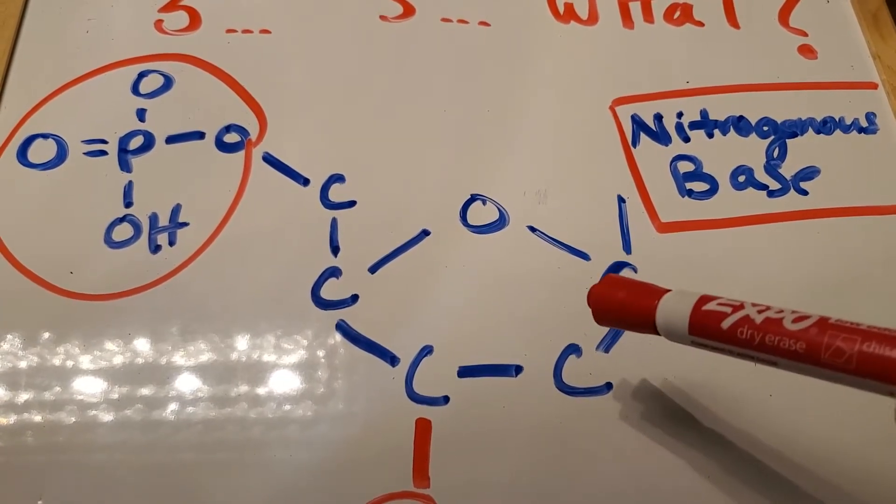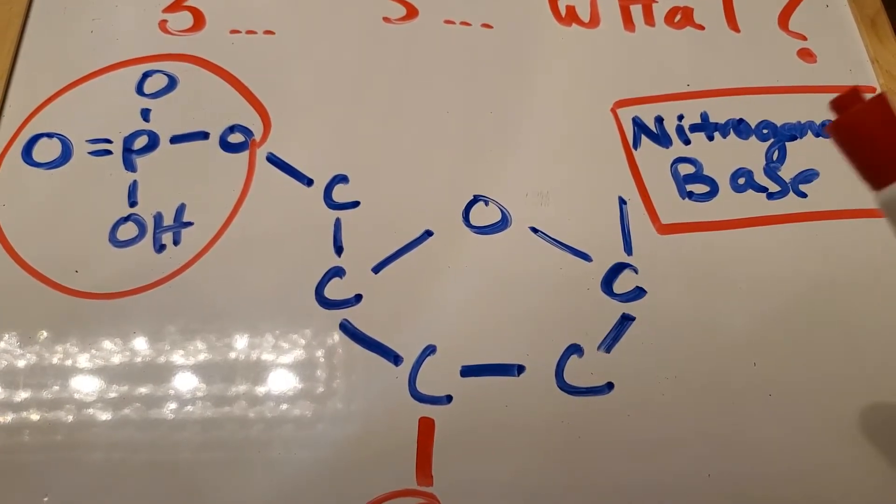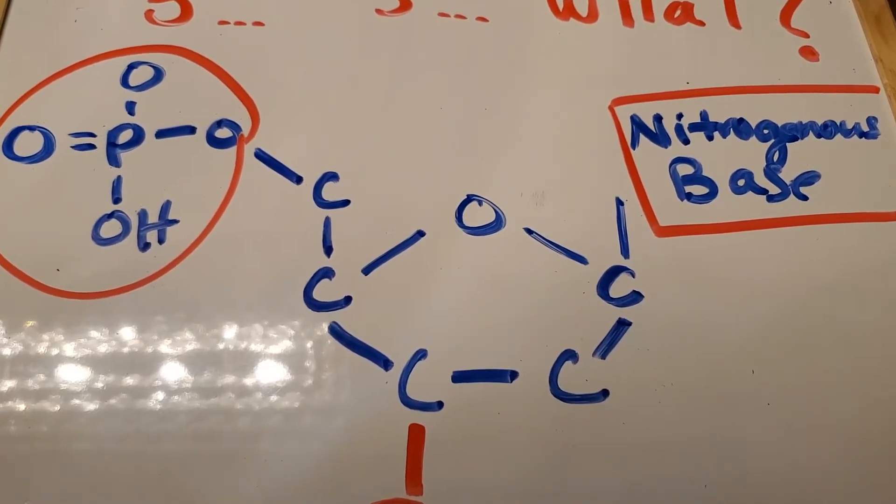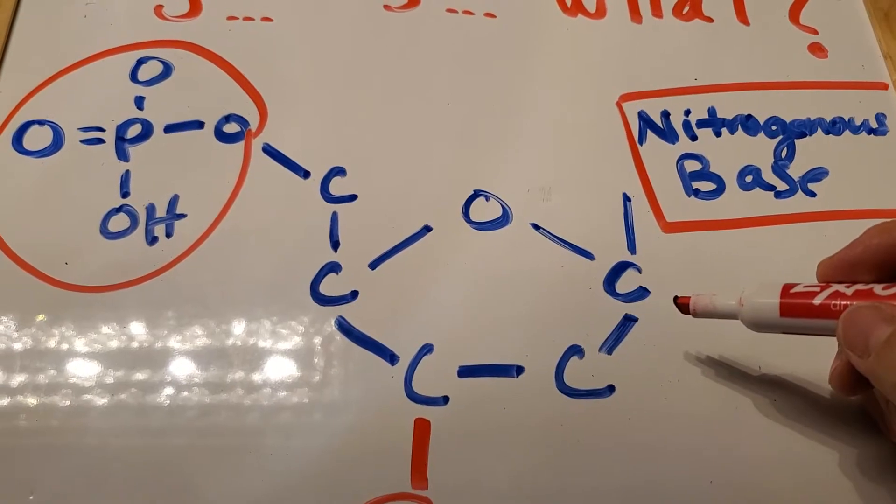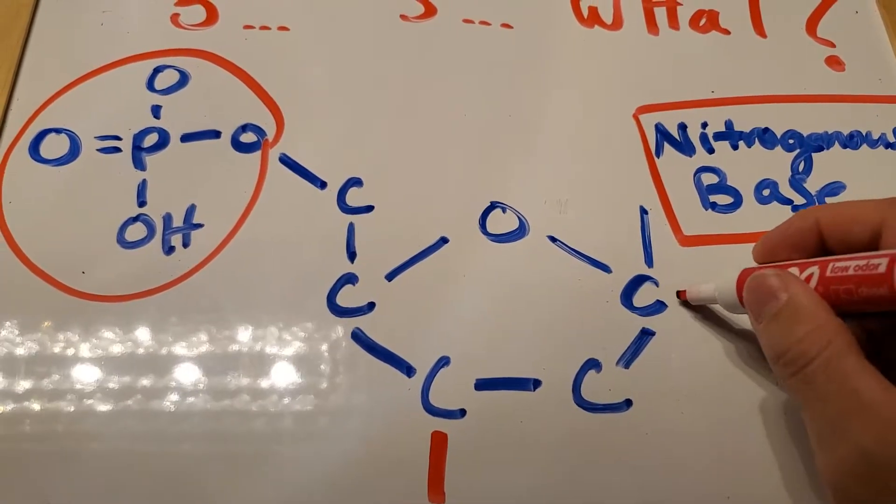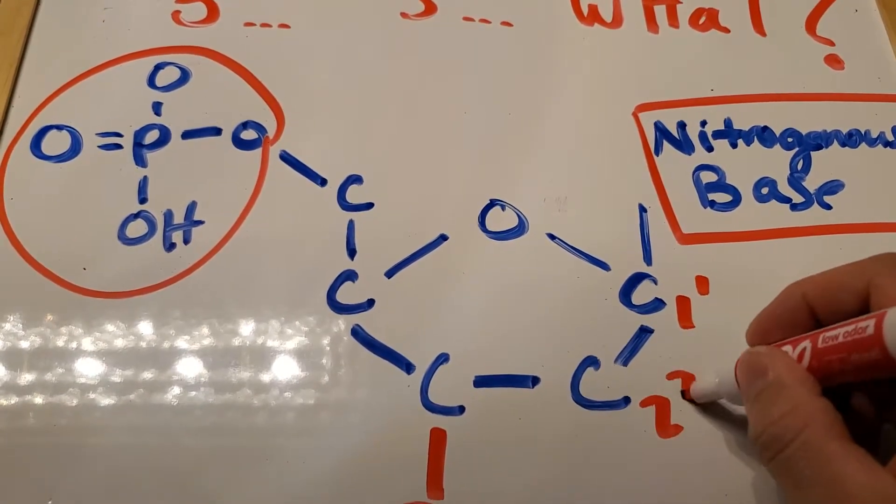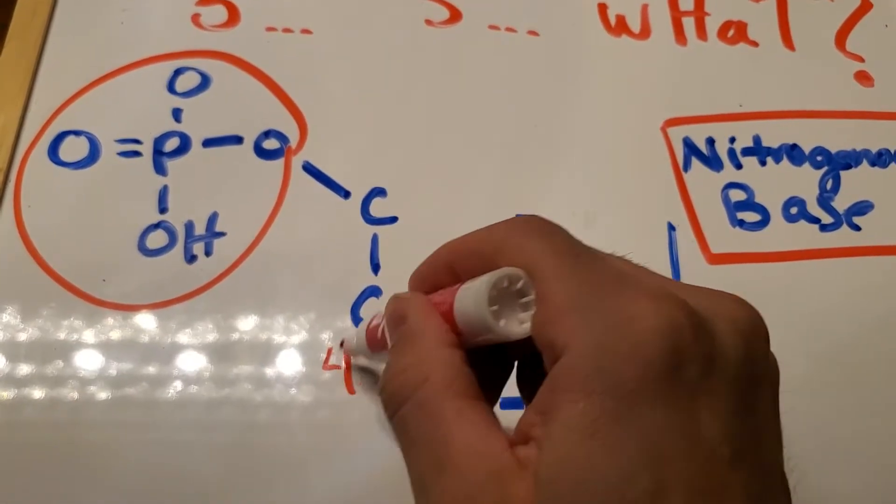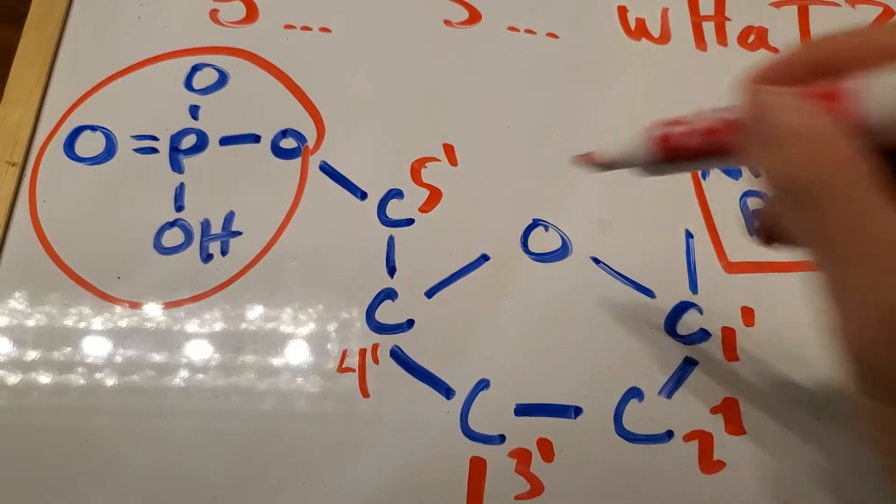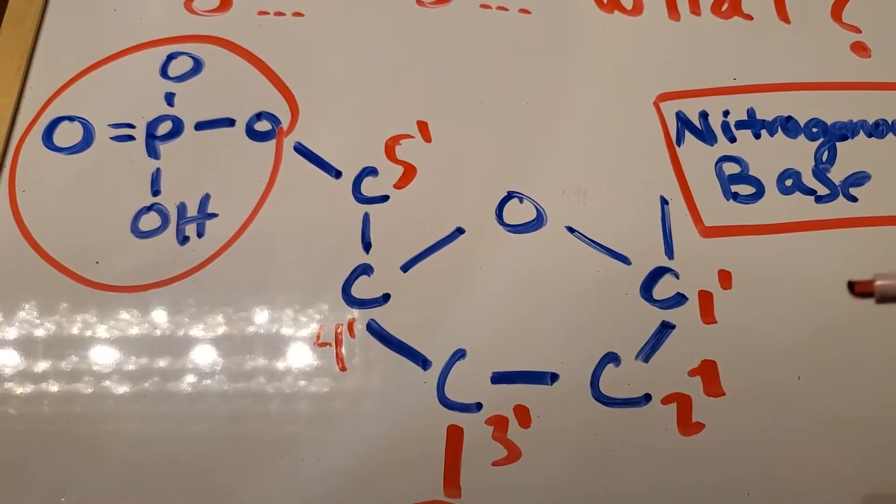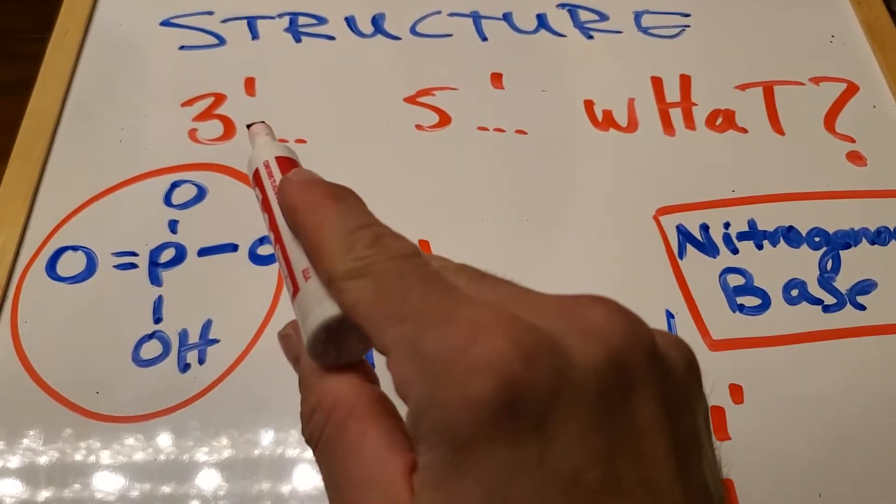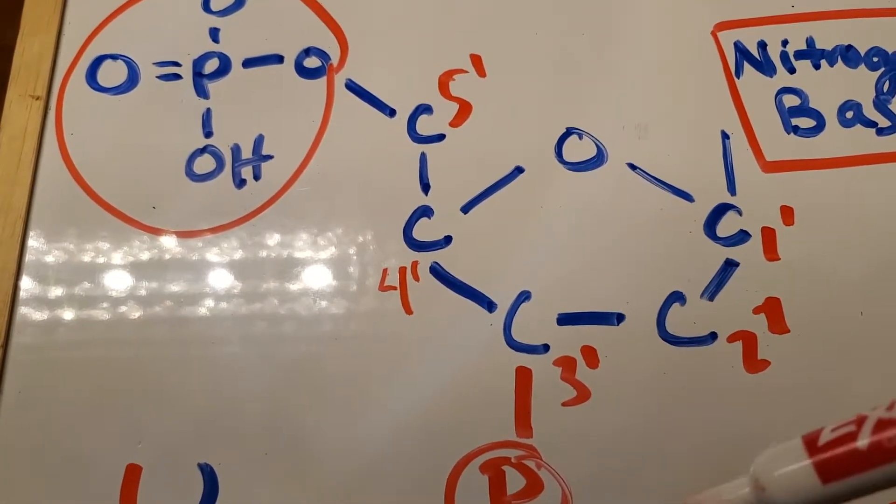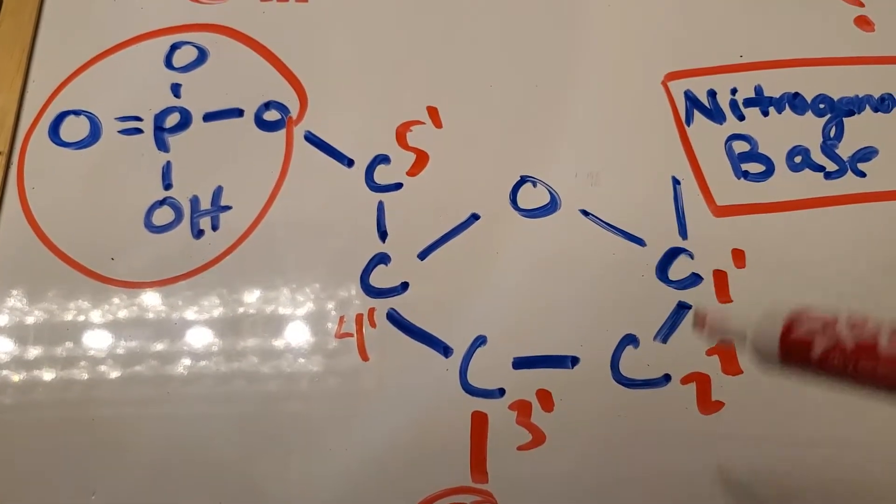But this thing right here, this is what determines that 3 prime, 5 prime thing. So, those numbers just come from a name given to each of the carbons. This is the 1 prime, that's the 2 prime. This is 3 prime, 4 prime, and 5 prime. So those numbers, 3 prime and 5 prime, they're just telling you the orientation of this nucleotide.